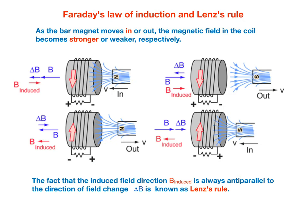This cartoon illustrates the four possibilities that occur when a bar magnet is moved through a coil. There are four possibilities because as the bar magnet moves in, the magnetic field in the coil becomes stronger; as the bar magnet moves out, it becomes weaker. In addition, the north pole can be moved in or out, and the south pole can be moved in or out. All four possibilities are accounted for by Faraday's law of induction. The minus sign in Faraday's law represents Lenz's rule — namely, the induced field direction B_induced is always antiparallel to the direction of the field change delta B. In other words, the induced current in the coil is directed such that the associated induced magnetic field opposes the change of the magnetic flux.